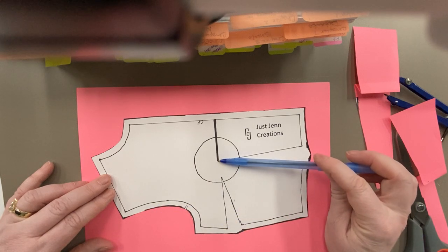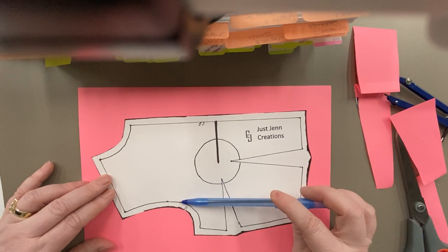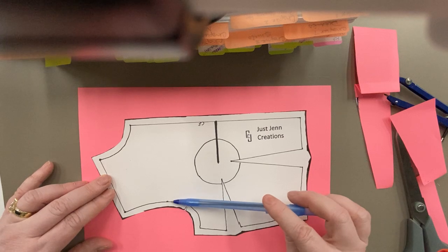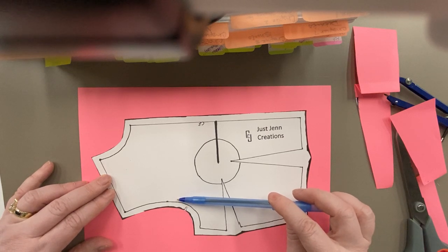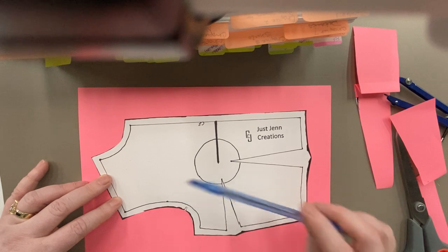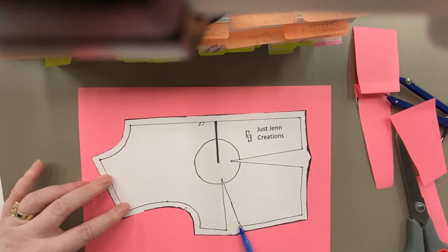We're also going to cut one from the bust line over to the arm's eye. I would do it probably in the bottom half of the arm's eye. And we are going to cut from the fold line of this dart into the bust point.